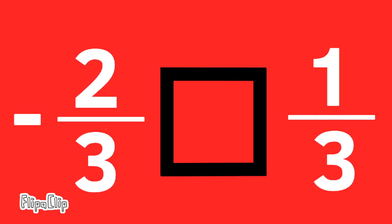Negative 2 thirds compared to 1 third. Negative 2 thirds is less than 0, and 1 third is greater than 0. Therefore, negative 2 thirds is less than 1 third.